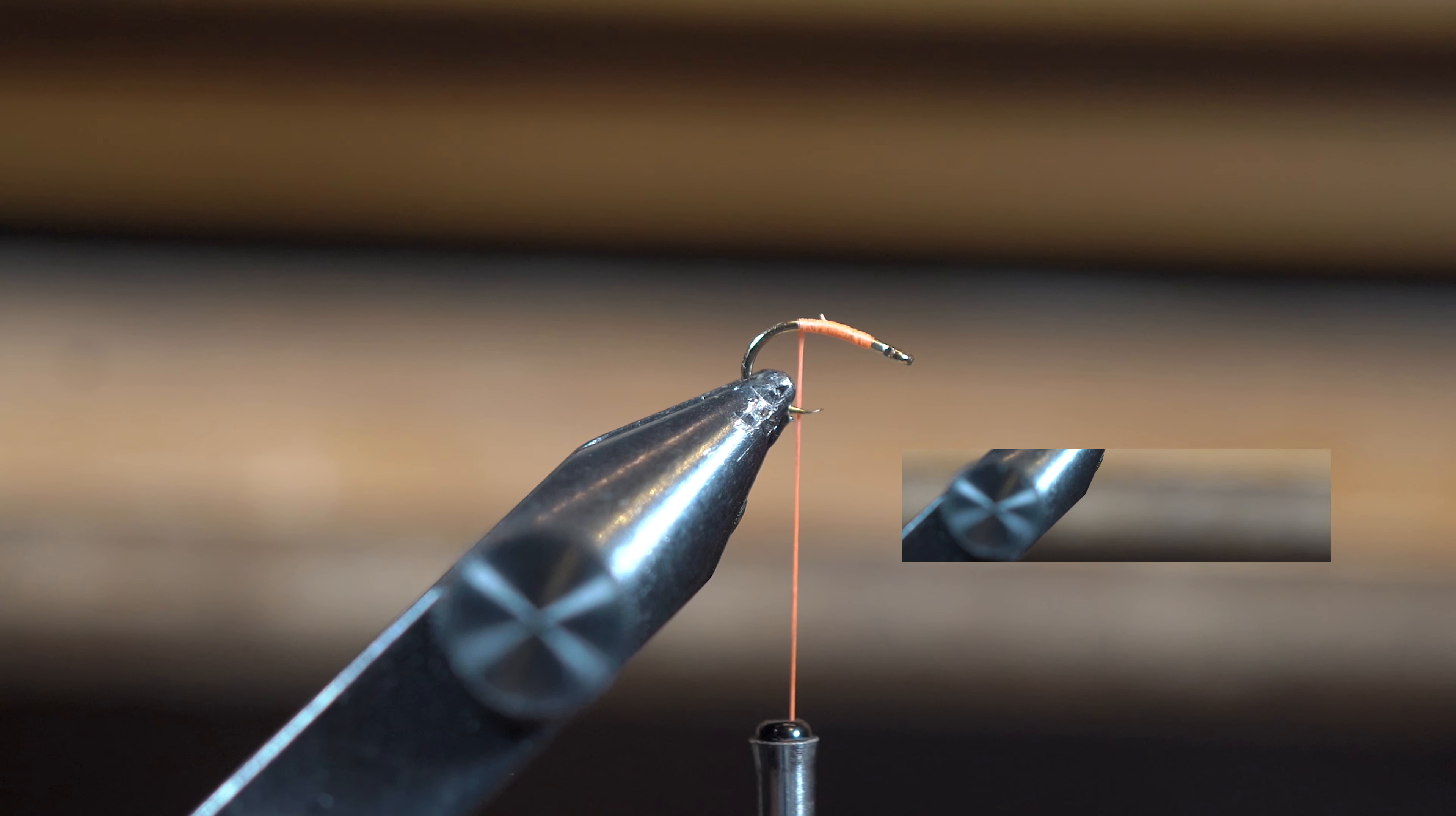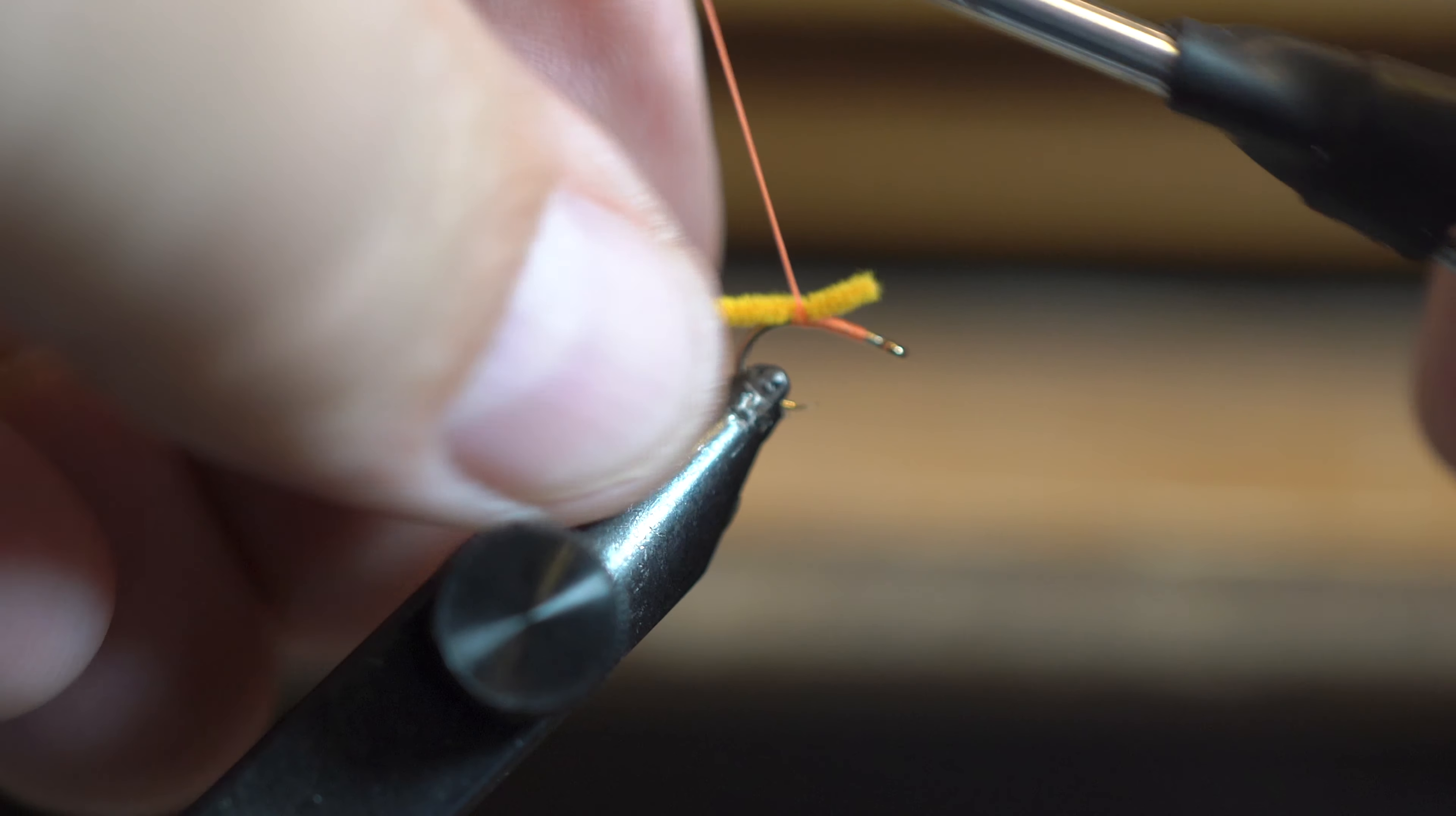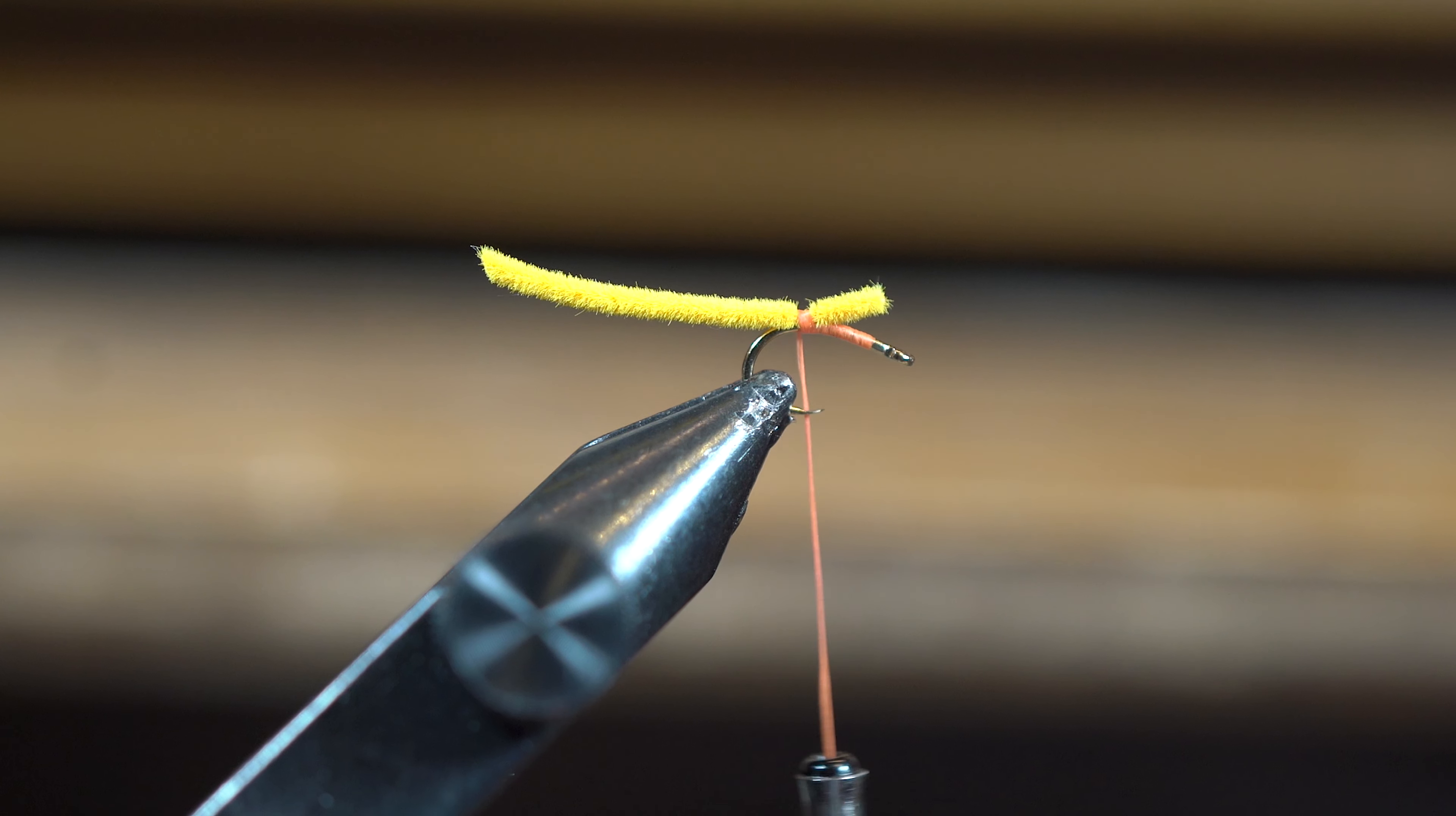If you've fished quite a bit and turned over rocks in creeks and rivers, you'll find these little tiny worms that are prevalent in many fisheries. A lot of us grew up using the San Juan worm, which is a great fly, but they're quite big and bulky. A lot of times these worms are less than an inch long.